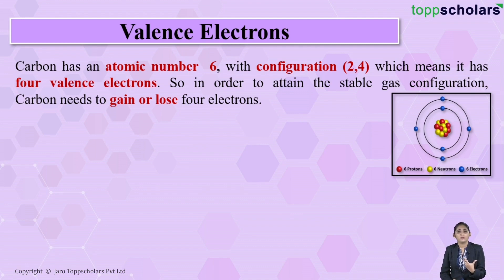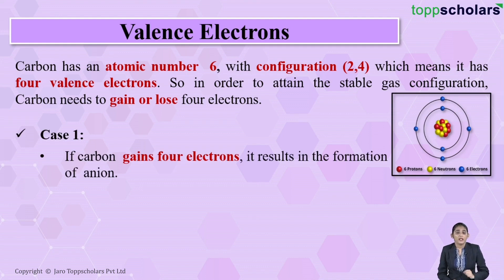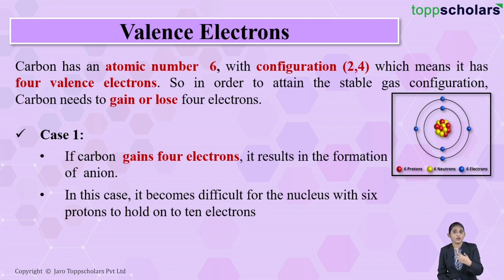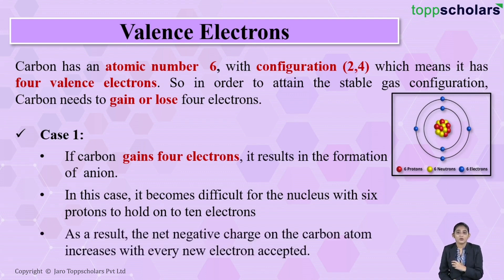Carbon is a really interesting element. Let's see what it does to become stable. If carbon gains four electrons, it forms the C⁴⁻ anion. The carbon atom has six protons and six electrons, but gaining four electrons makes the total number of electrons ten. The negative charge on the nucleus increases, making it very difficult for the nucleus with six protons to hold on to these ten electrons.